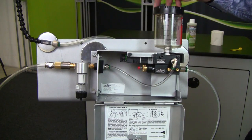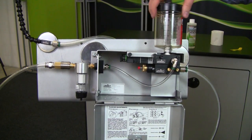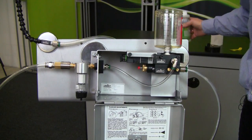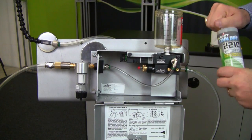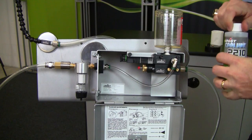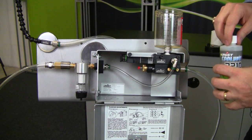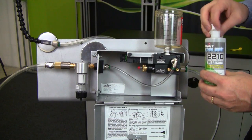The next thing we're going to do is fill the reservoir with fluid. In this case our Cool Lube 2210 product, which is great for non-ferrous materials. If you're going to be cutting or machining ferrous materials, we recommend our Cool Lube 2210 EP.